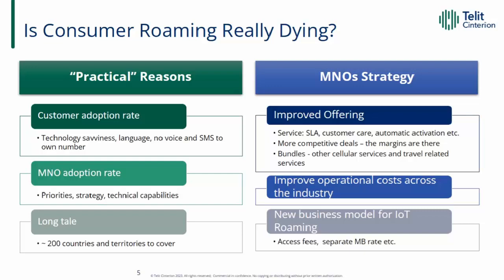There are also reasons related to MNO response strategy. MNOs can improve roaming products and create more value for customers by ensuring support, reducing hassle through automatic activation, and more. As an industry, MNOs can reduce relatively high operational costs by better streamlining reciprocal processes — something the GSMA is constantly promoting. Additionally, MNOs are introducing new pricing practices for IoT roaming, such as access fees, that affect the IoT business model. So, to the question of whether global roaming is dying — the answer is no. Consumer roaming is not dying, but changes may affect IoT.